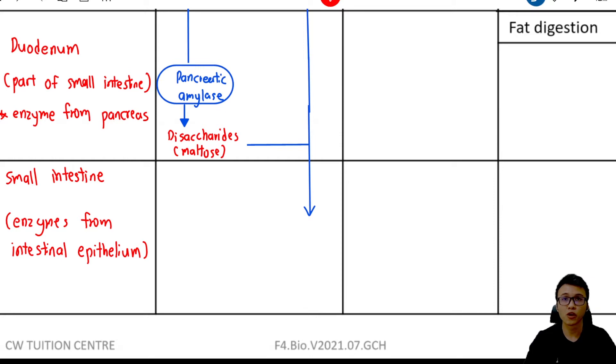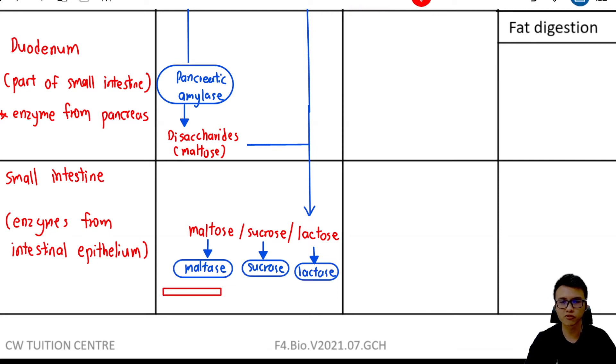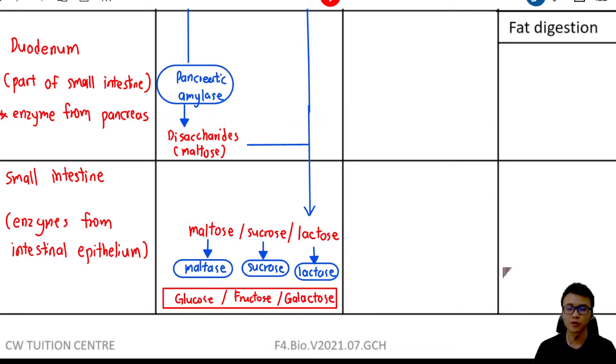This maltose, along with other disaccharides, will go to the small intestine for further digestion. Inside the small intestine, we have three types of disaccharides: maltose, sucrose, and lactose. All these disaccharides will be digested into their respective monomers. Maltose will be digested by maltase, sucrose by sucrase, and lactose by lactase. They will form the simplest form of carbohydrate: glucose, fructose, or galactose. These are small enough to be absorbed by the small intestine. That's it for carbohydrates.